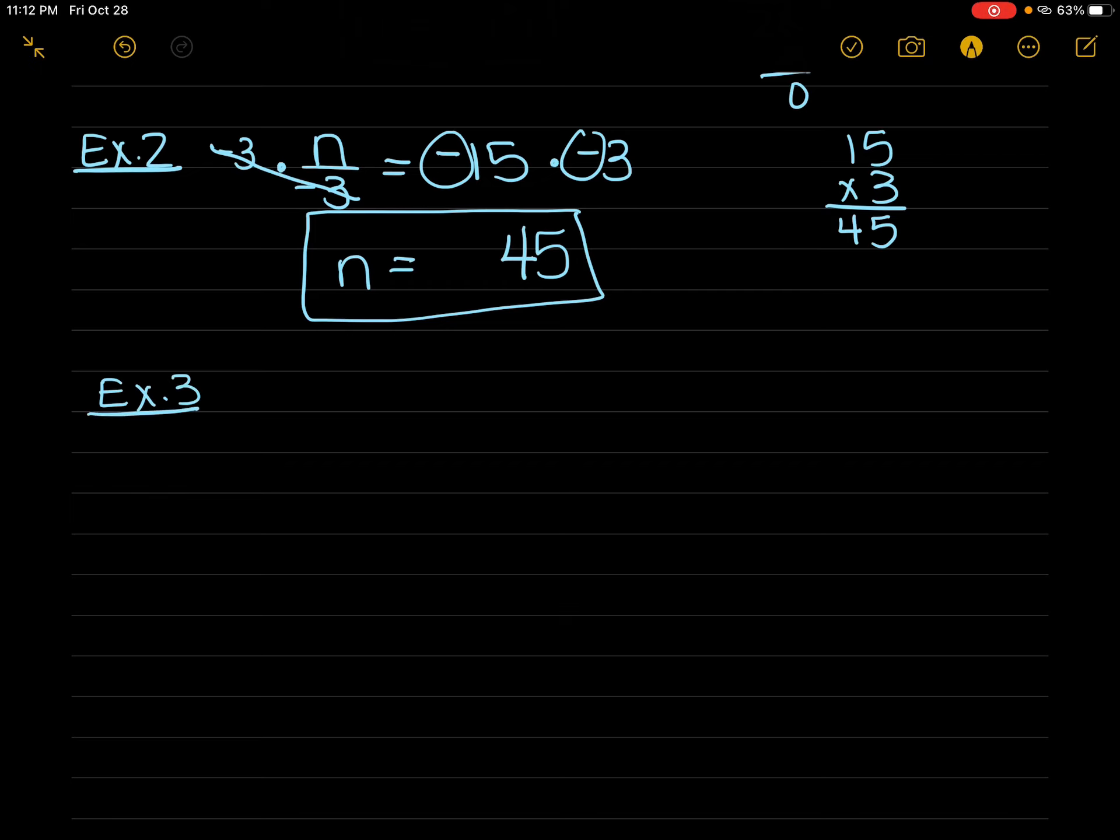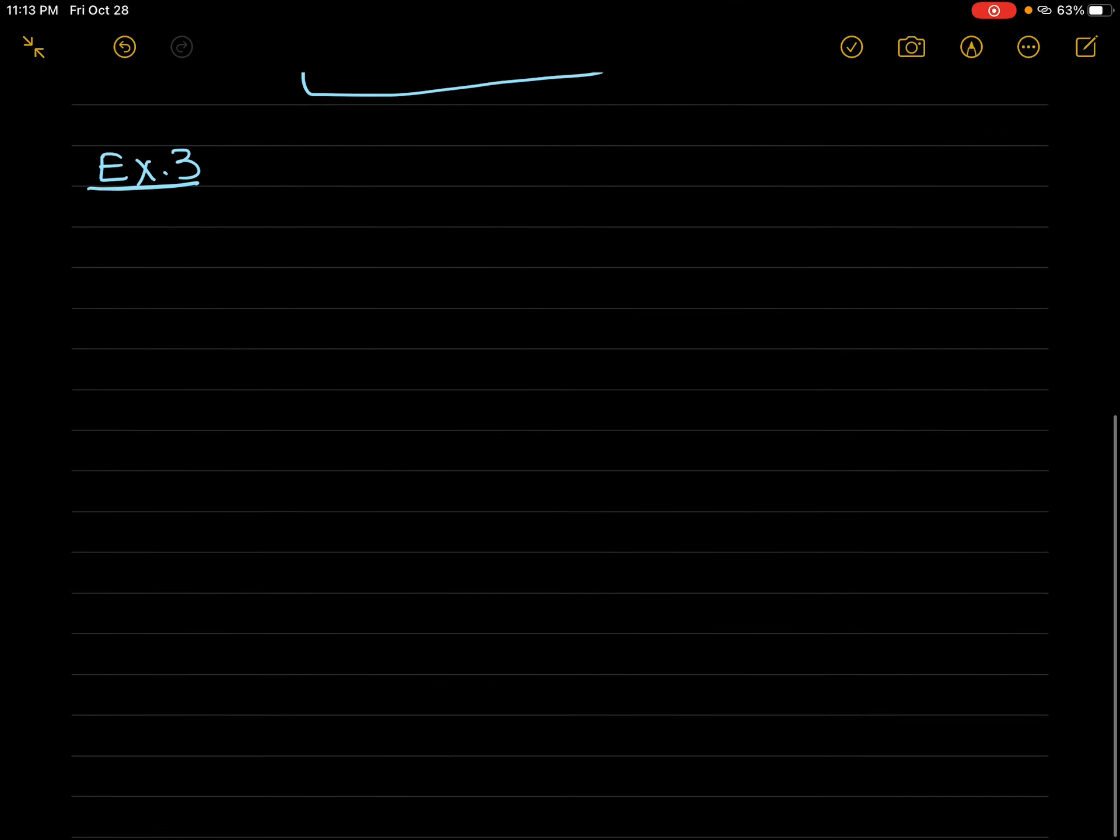Last one, example 3. These are quick lessons because they're really just reviewing things that we've already done. Example 3 is -n = 37. So this one, you might think, oh, I don't have a multiplication or division here. But remember, if you don't have a number in front of the n, it's always a 1.